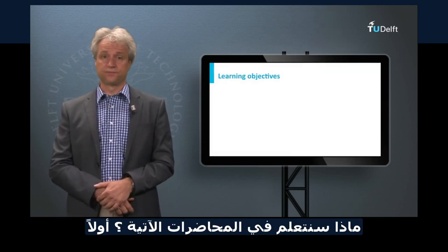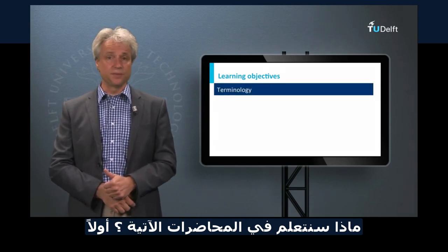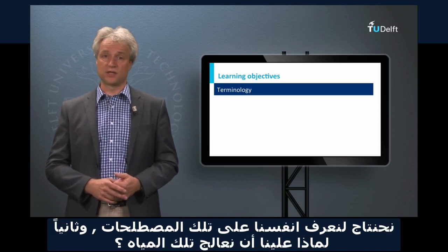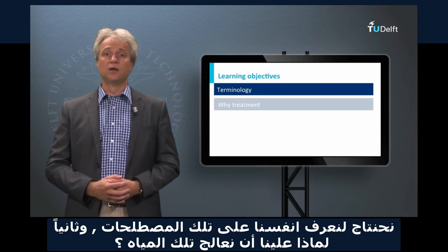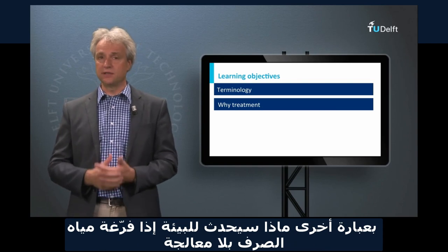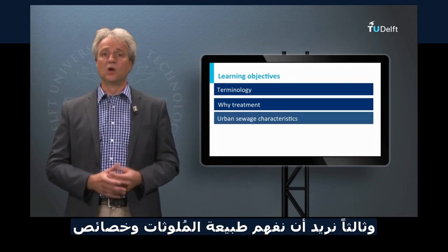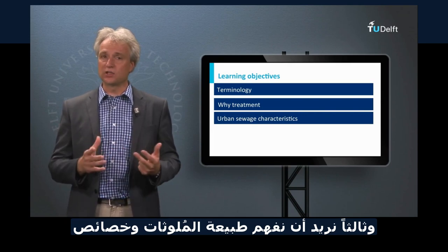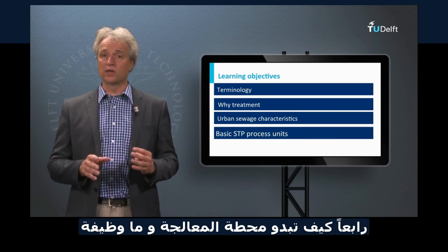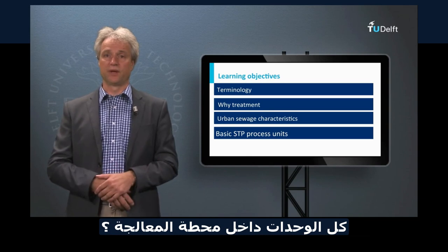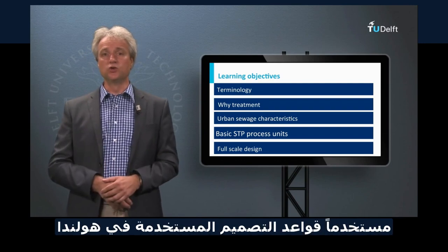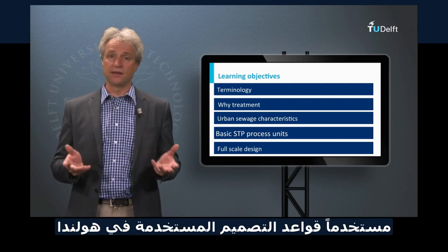What will we learn in the coming lectures? First, wastewater treatment engineering has its typical terminology and we need to acquaint ourselves with it. Second, why do we need to treat these waters — what is their environmental impact when discharged untreated? Third, we need to understand the nature of the pollutants and the characteristics of sewage in general. Fourth, how does a sewage treatment plant look like and what are all the functional units doing? By finishing this course, we should be able to design a full-scale sewage treatment plant using the design features commonly applied in the Netherlands.